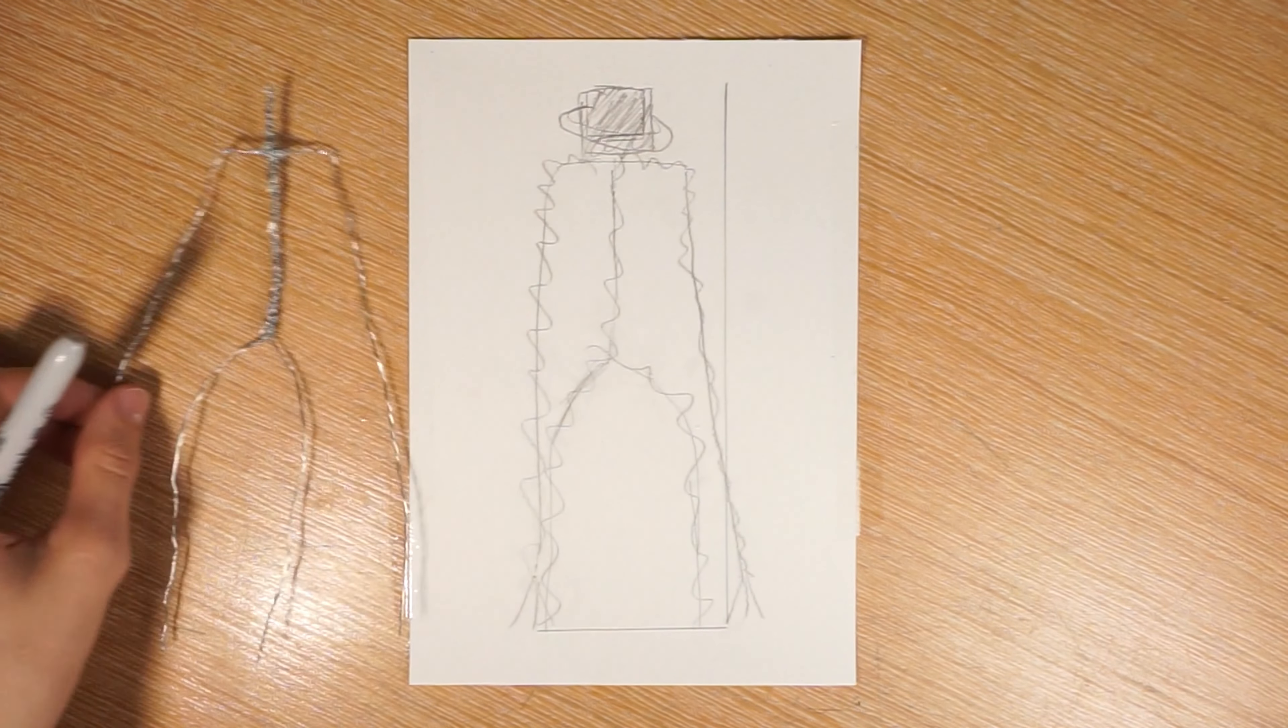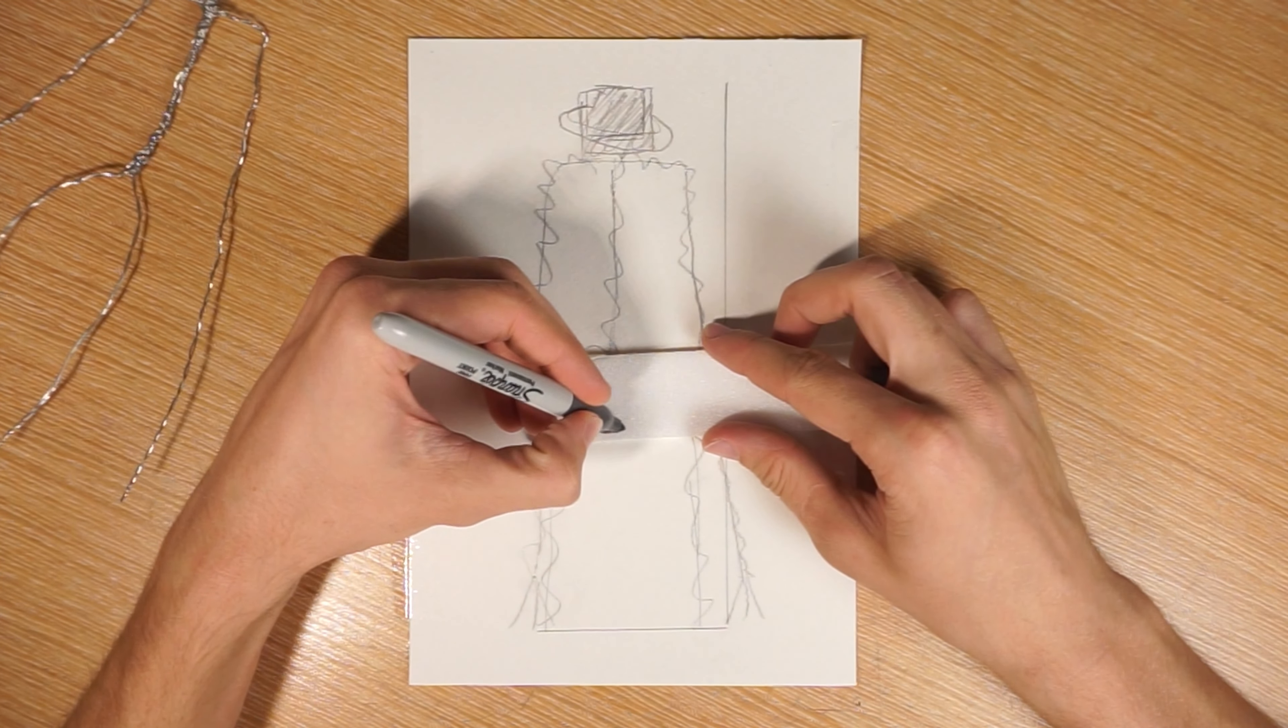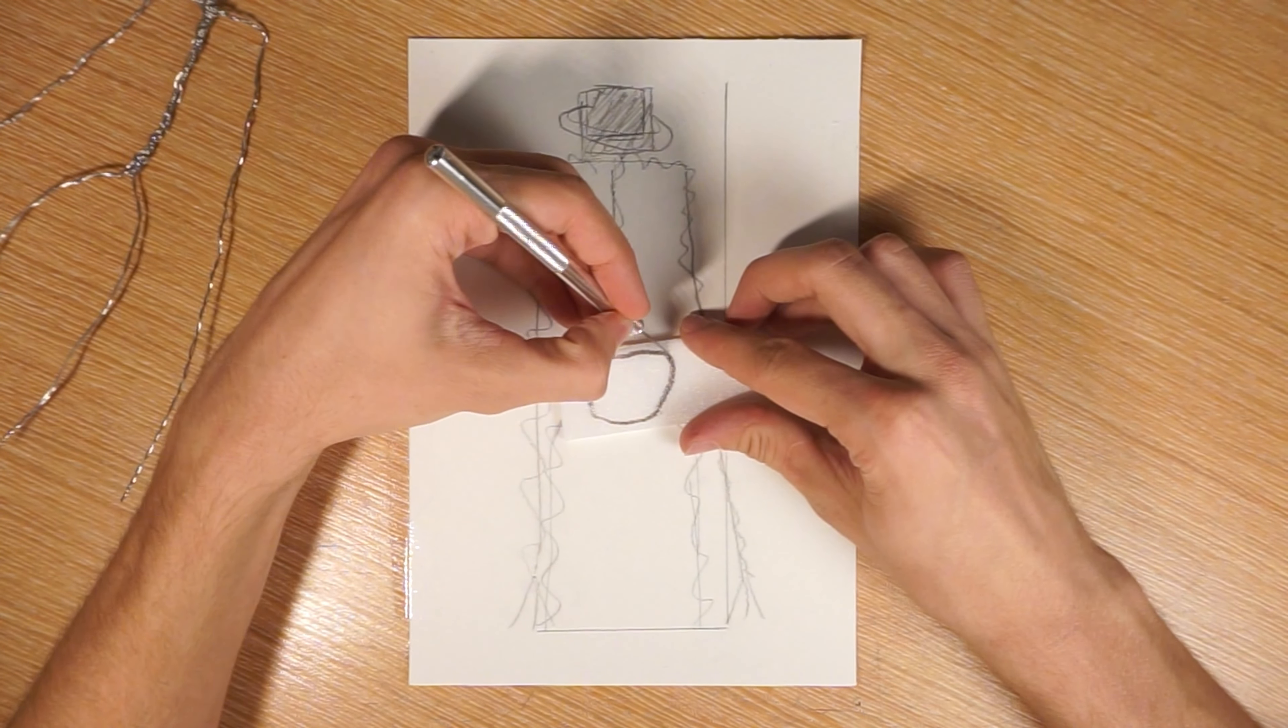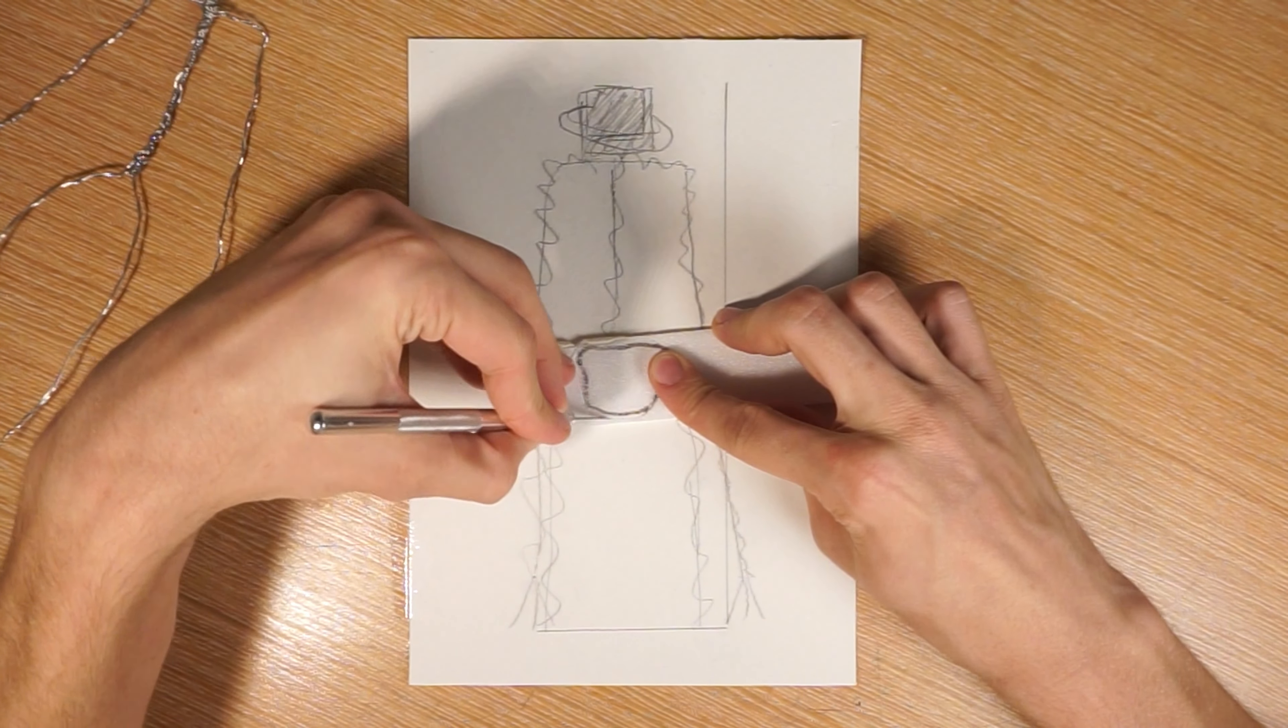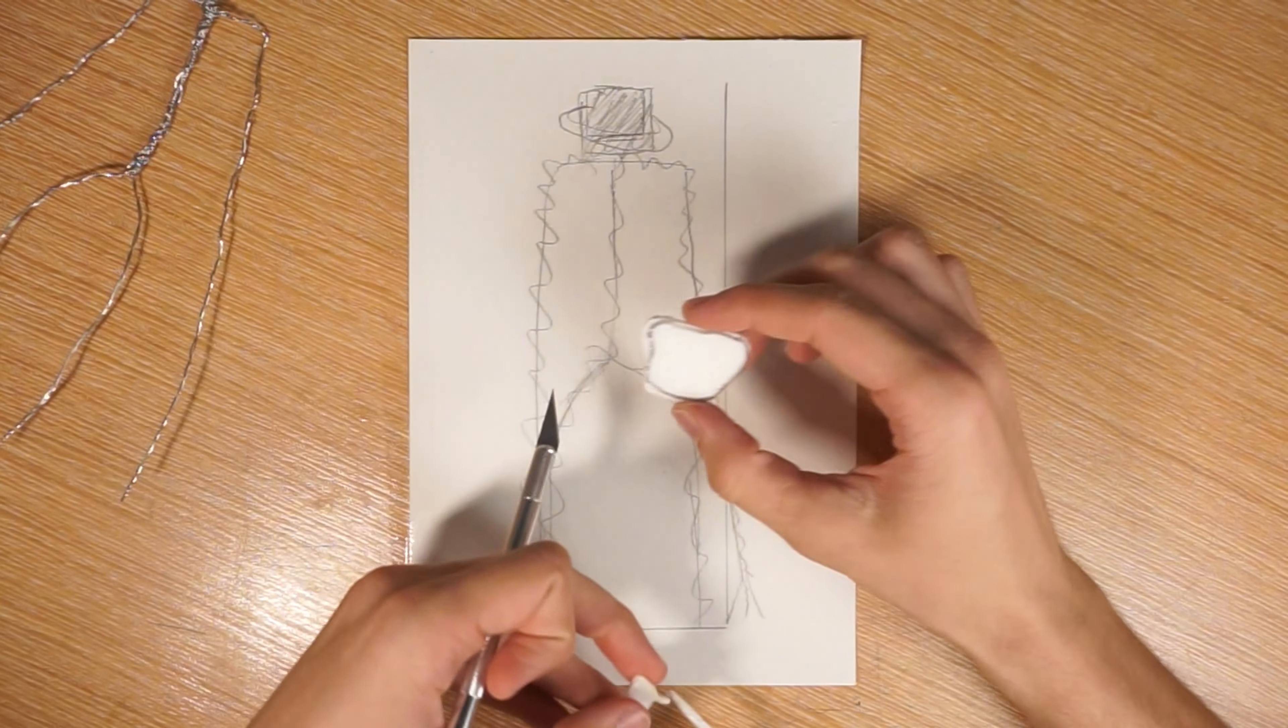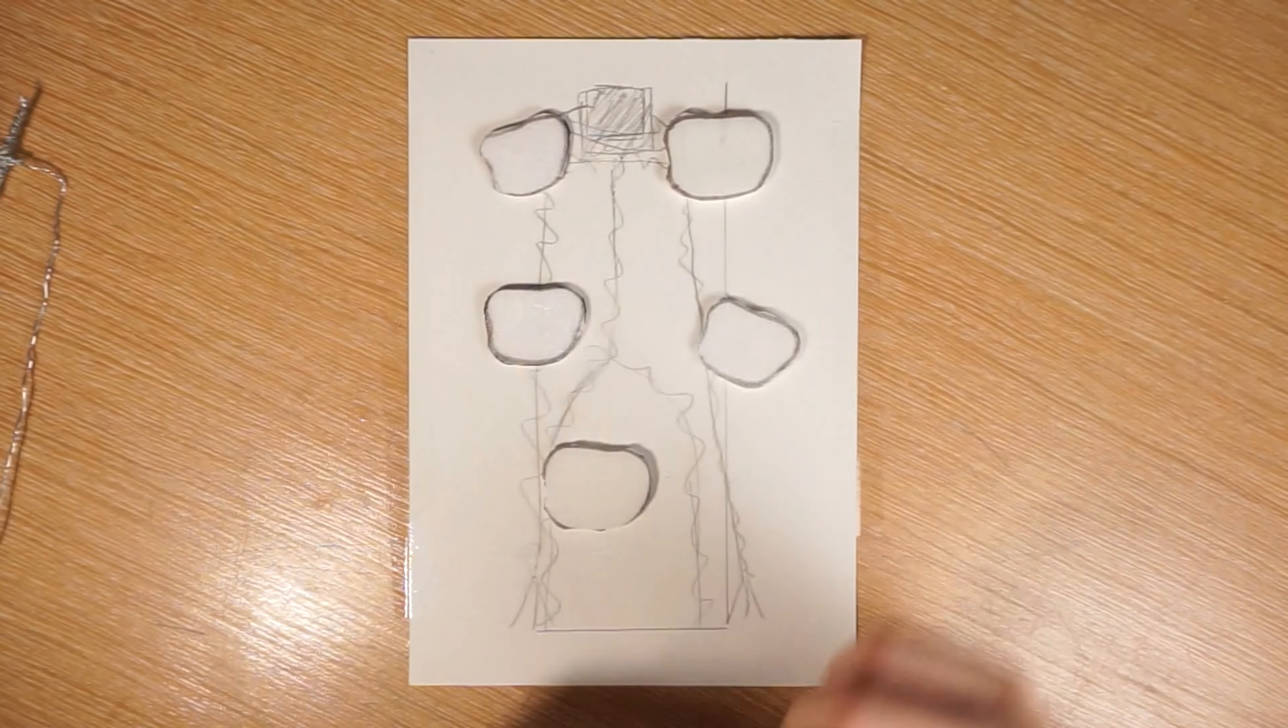The main structure is done, so it's time for the head. I'll make the head out of foam core. One piece is too thin, so I cut out five and I'll glue them all together.